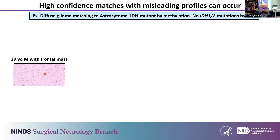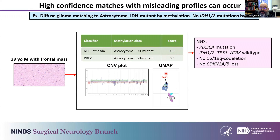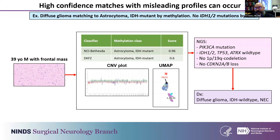Another limitation is that high-confidence matches can be misleading. For example, we had a 39-year-old man with a frontal mass that looked like diffuse astrocytic glioma — all classifiers pointed with strong indications to astrocytoma IDH mutant. We did NGS and there were no mutations in IDH1, IDH2, P53, or ATRX. So this is not an IDH mutant astrocytoma at all. We then have to come up with something more descriptive when there are discrepancies between epigenetic profiling and other tumor features.